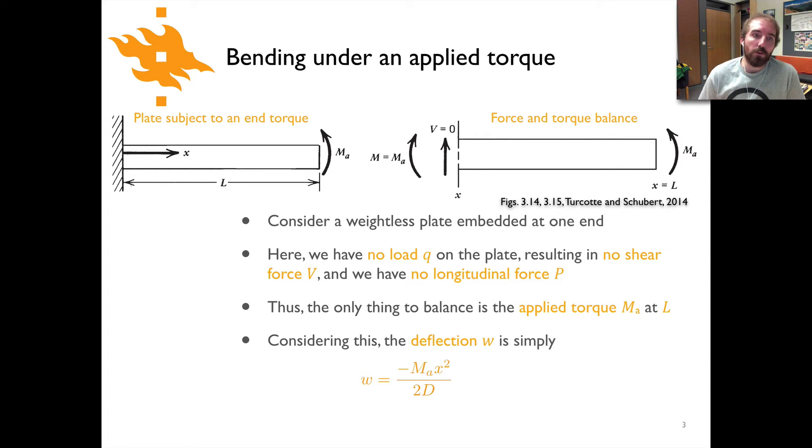Here's our picture for the first case. We have an elastic plate fixed to the wall, embedded in the wall here, and it's of some length L with the x-axis going along its length. I'm going to apply a torque at the end of this plate. We're going to consider the plate to have no weight—it's a weightless plate with no load acting along its length, no shear forces, and no longitudinal or axial force. The only thing is that we're going to apply a torque at the free end of this elastic plate.